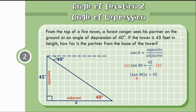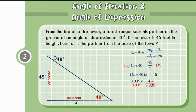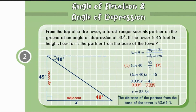Using a scientific calculator, the value of tangent 40 is equal to 0.839, so 0.839 times X equals 45. To isolate X, we divide both sides by 0.839, and 45 divided by 0.839 is equal to 53.64 to the nearest hundredths. That is equal to X. Therefore, the distance of the partner from the base of the tower is 53.64 feet.